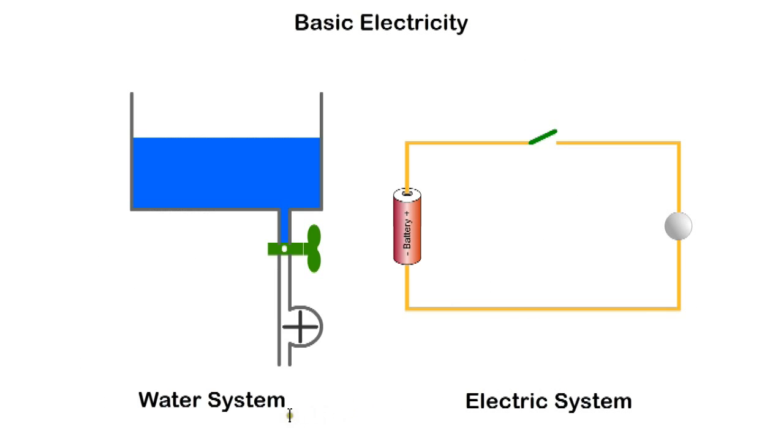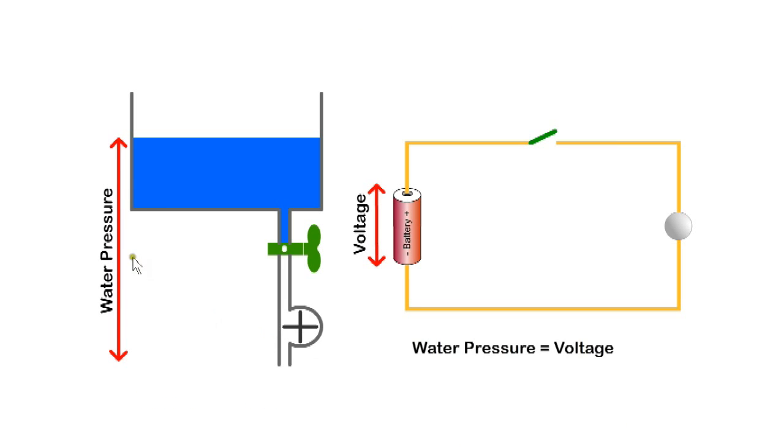We'll use an analogy with a water circuit to explain the operation of an electric circuit. The water pressure due to the height of the tank is similar to the potential difference or voltage provided by the battery. The valve is similar to the switch and the wheel is similar to the lamp, while the flow of water can be compared to the flow of current.